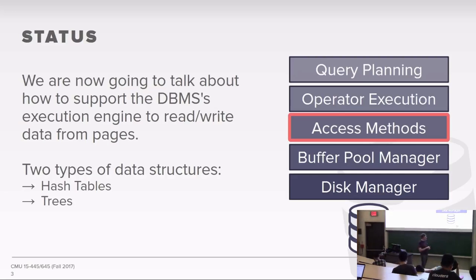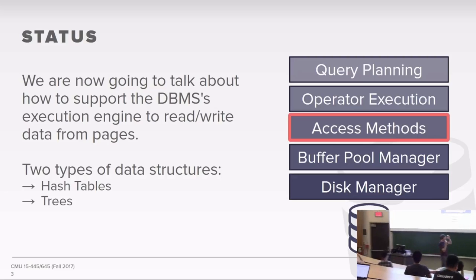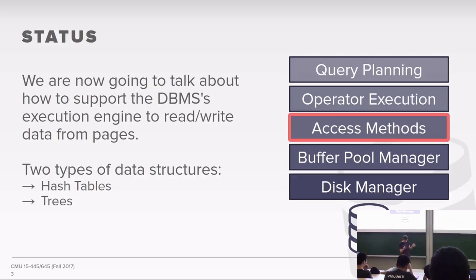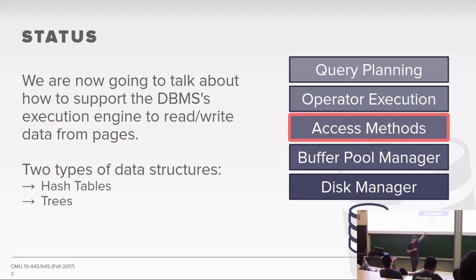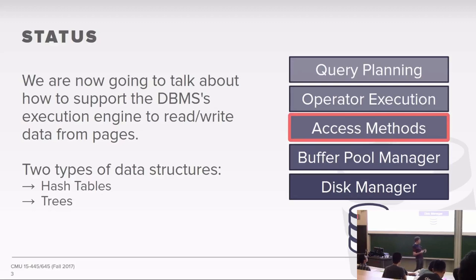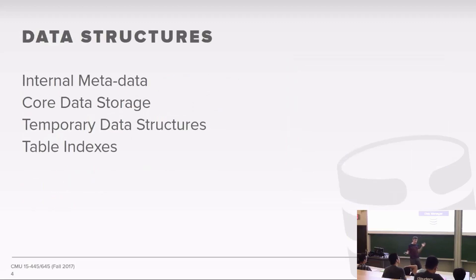Just a reminder where we're at in the course: we're going from the bottom, the underlying disk, and then building up layers on top of that inside of our database management system. We're doing this because providing an abstraction between the different layers allows us to be more flexible in how we decide to build our different components. Right now, we're smack dab in the middle, talking about access methods — how the database system is going to be accessing our underlying tuples.